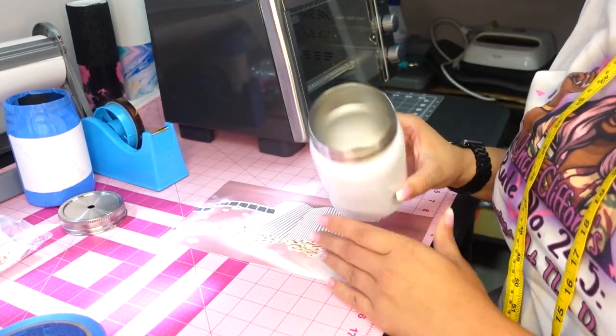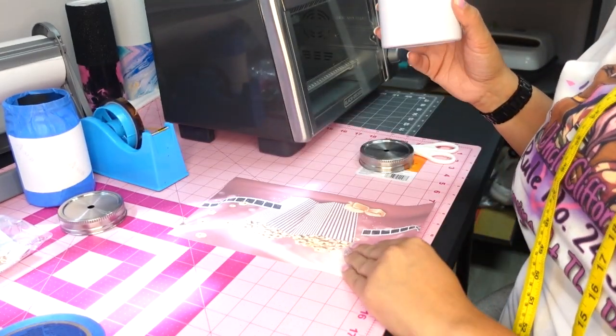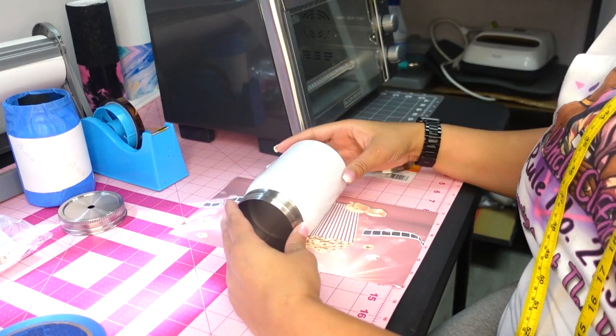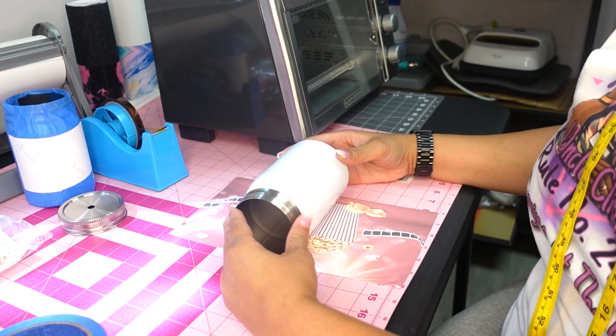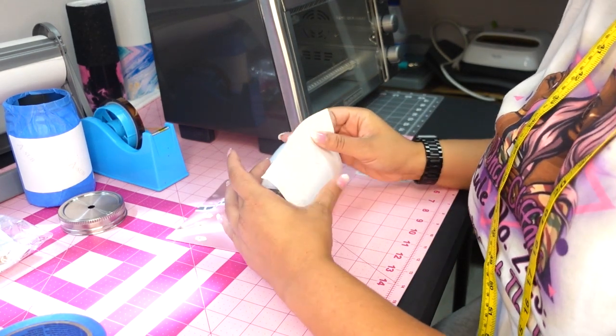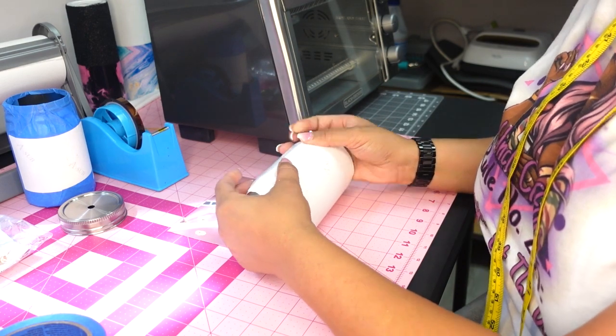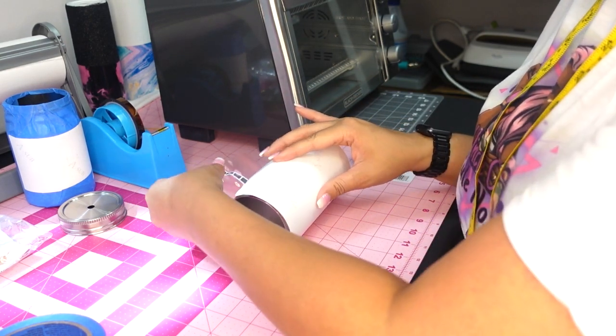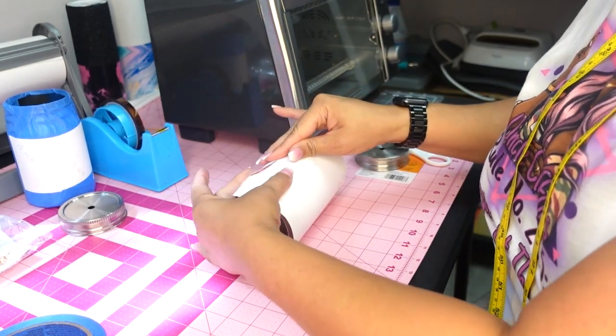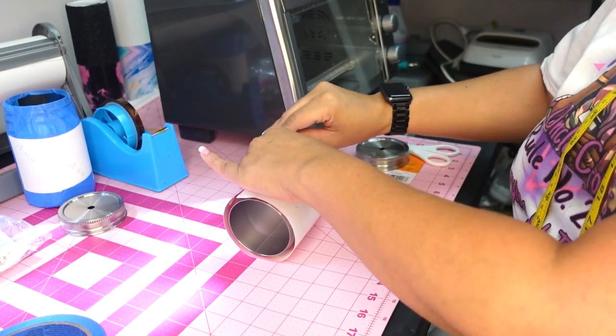The easiest way for me to wrap the tumblers, after doing a bunch of these, this is the easiest way. I put the paper down first and I put my tumbler in the middle like this, and then I take my paper and I wrap it around. Now I did make my image a little too big, but that's okay. And then I pull it really, really tight.